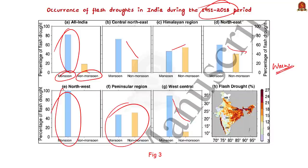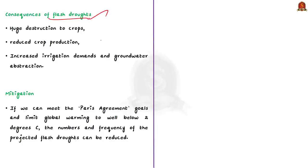The consequences of flash droughts include huge destruction to crops, reduced crop production, increased irrigation demands, and increased groundwater usage in India. How can we mitigate it? The answer is controlling climate change. According to experts, if we can meet the Paris Agreement goals and limit global warming to well below 2 degrees centigrade, the number and frequency of projected flash droughts can be drastically reduced.